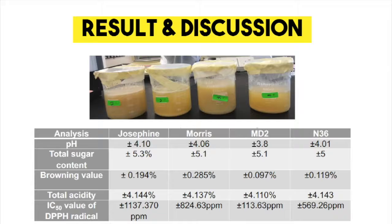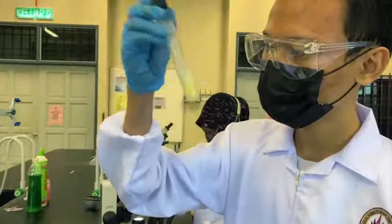Thirdly, for total acidity, the lowest reading is MD2. Fourthly, MD2 has the lowest browning value, which indicates the possibility of the lowest food deterioration. Lastly, for antioxidant activity, the lower IC50 value indicates higher antioxidant activity of the sample. Based on the results, MD2 has the strongest antioxidant activity among all of the pineapple peel vinegars, and the study objectives have been successfully achieved.